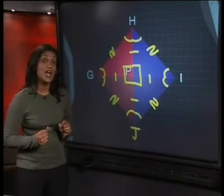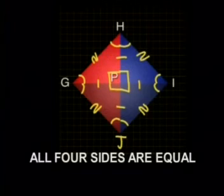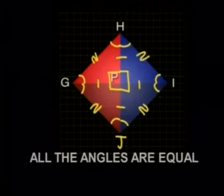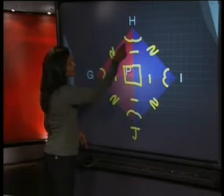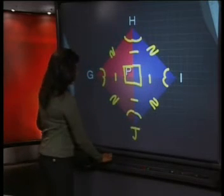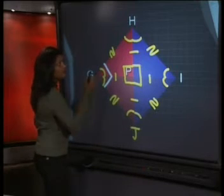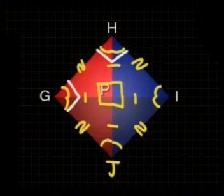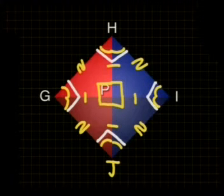We have a lot of information, so now we can use it to find all the properties of a square. Let's start with the length of the sides: all four sides are equal to one another. All the angles of the square are also equal to one another. Each of the half-angles is 45 degrees, which means the entire angle at G is 90 degrees — 45 plus 45. The entire angle at H is also 90, and the same is true for I and J. That's what we expected in a square.